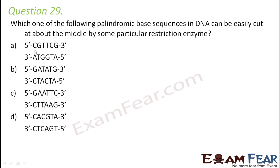Let us compare each option to check if the two strands are complementary. For option A: C doesn't pair with A, so this is not correct. For option B: G-C is fine, A-T is fine, T-A is fine, but A doesn't pair with C — so this is also not correct. For option C: G-C, A-T, A-T, T-A, T-A, T-A, C-G — all base pairs follow the pairing rule correctly. So option C is the right answer.